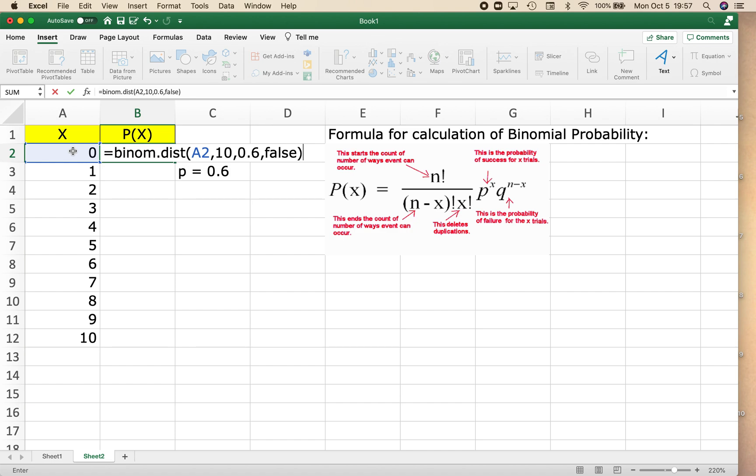This is going to tell me the probability that 0 of my trials come out to be successes. So if I hit enter, we see that the probability that I have 0 successes out of 10 trials is 0.0001.